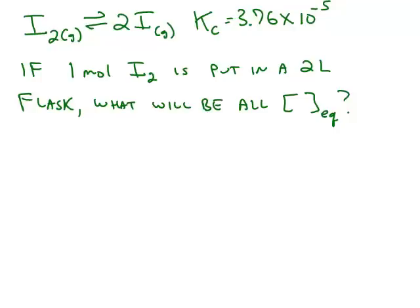Here's another problem where we're going to do an ice chart. We have a balanced reaction given to us. We have the Kc value. We start the reaction by putting one mole of diatomic iodine in a 2-liter flask, and we want to figure out all of the equilibrium concentrations.